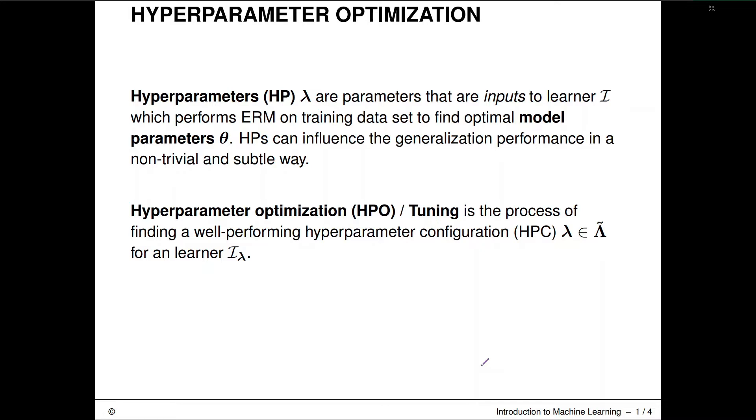Hyperparameters, we'll denote them with this bold vector lambda here, are parameters that are inputs to the learning algorithm I, so to our inducing algorithm. This is not an output, but an input to the algorithm, and defining these hyperparameters basically fixes the complete behavior of this training algorithm here, which usually performs empirical risk minimization on our training data set and then outputs optimal model parameters theta. Hyperparameters can influence the generalization performance of such a training algorithm and its resulting model in a non-trivial and subtle way.